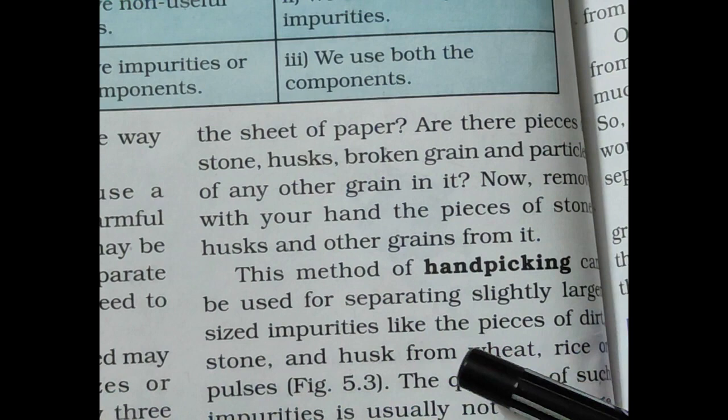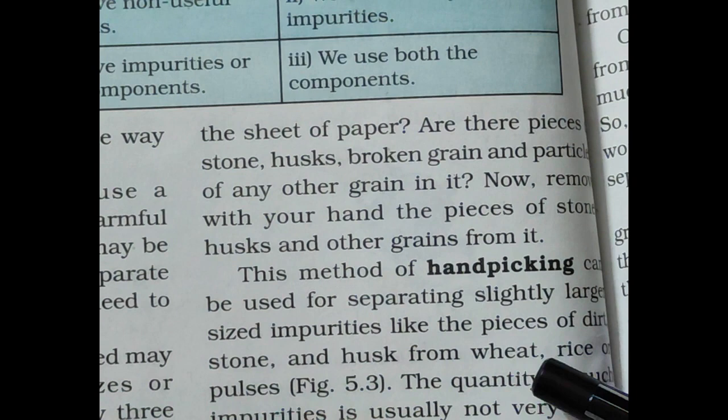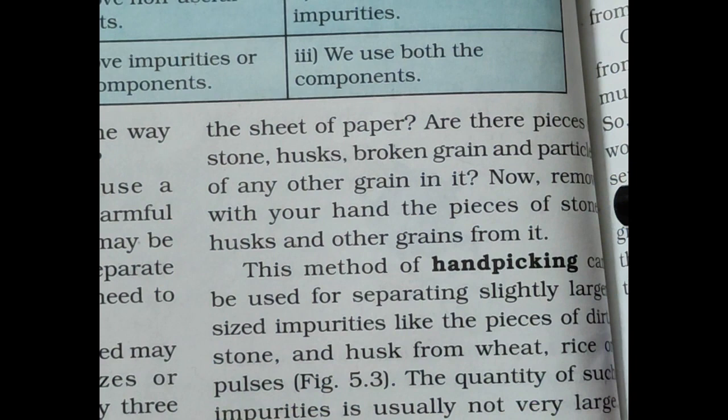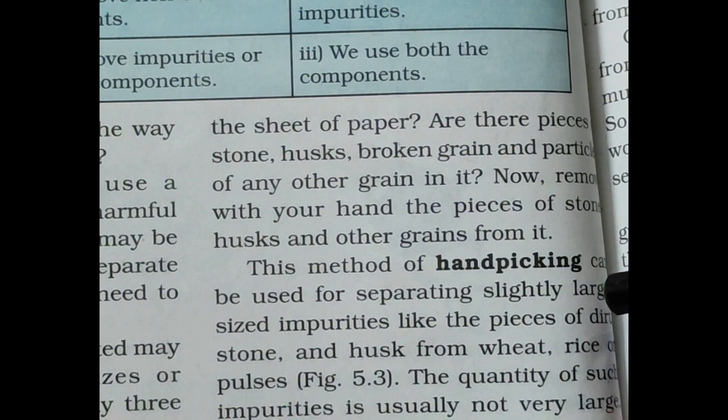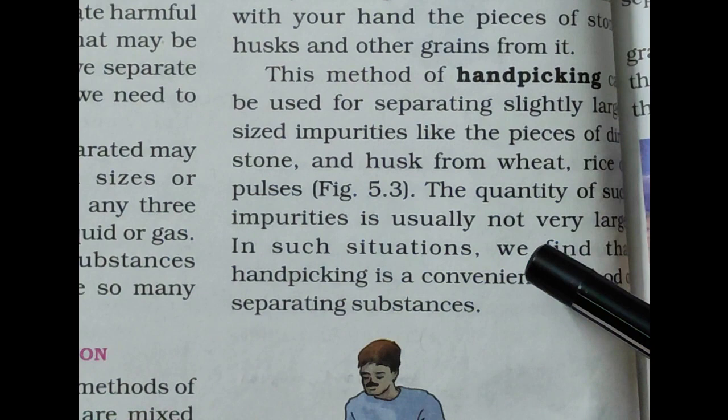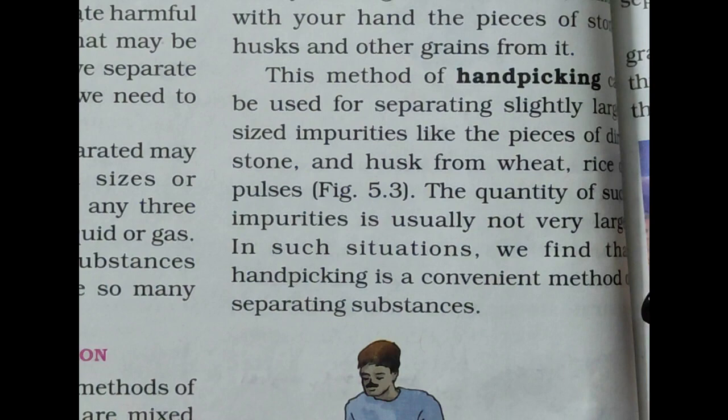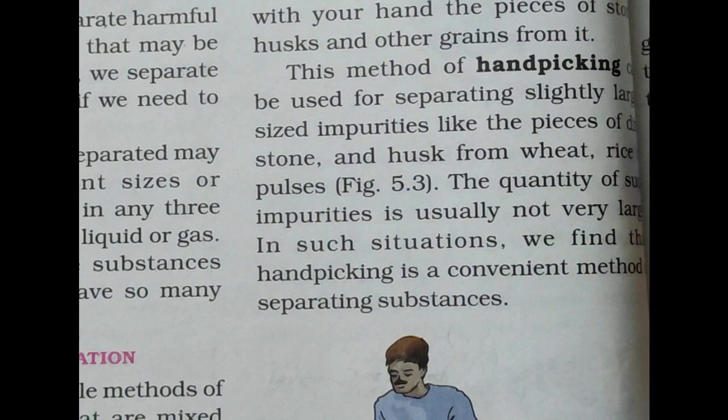This hand picking method can be used for separating slightly larger-sized impurities like pieces of dirt, stone, and husk from wheat, rice, or pulses. Hand picking is a convenient method when the quantity of such impurities is not very large — for instance, the number of stones in rice is usually small, making it easy to remove them by hand.